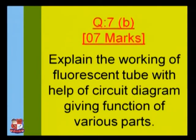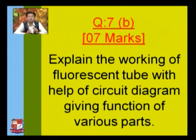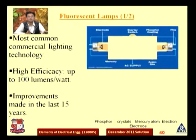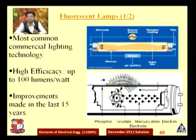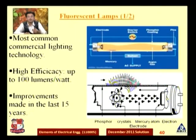In this video we have seen that the fluorescent tube actually works with a choke coil and a starter. Looking at the circuit diagram: this is the most common commercial lighting technology, having high efficiency up to 100 lumens per watt, with improvements still being made over the last 15 years. The basic thing in the fluorescent tube is the connection of the choke coil and starter. Research has also made it possible to make fluorescent tubes without a choke coil.